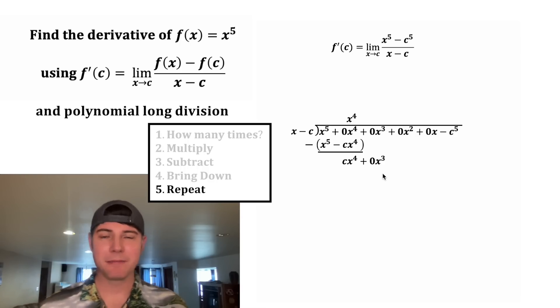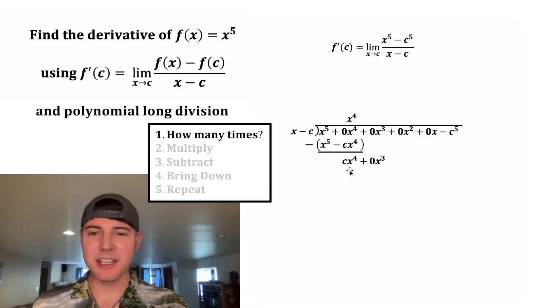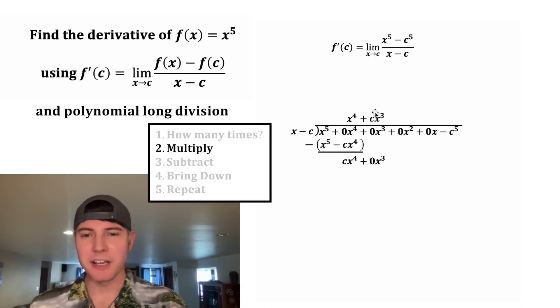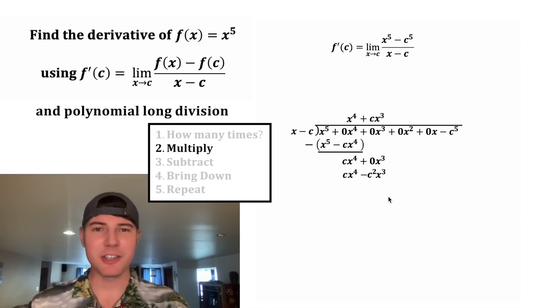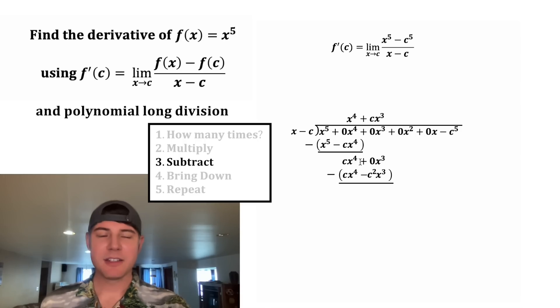Now we start over again. How many times will x go into cx^4? Well, that's going to be cx^3 times. So now let's multiply cx^3 times x gives us cx^4. And then cx^3 times negative c is negative c²x³. Now let's subtract. cx^4 minus cx^4 is 0. And 0x³ minus negative c²x³ is going to be positive c²x³.